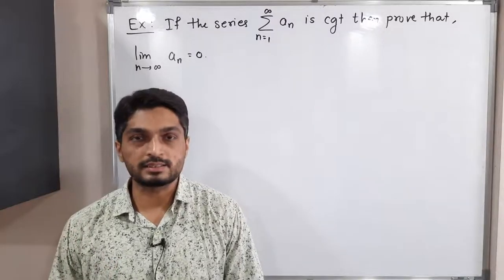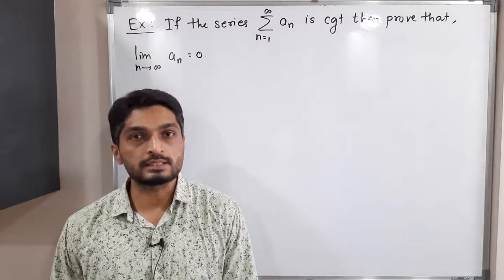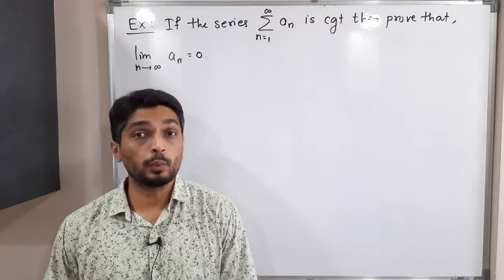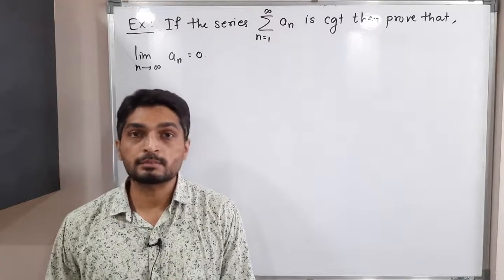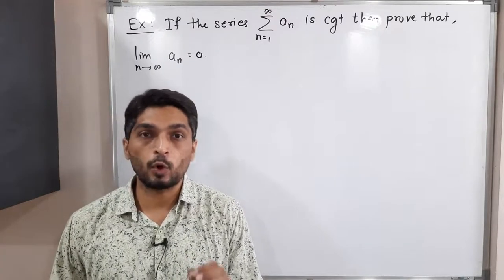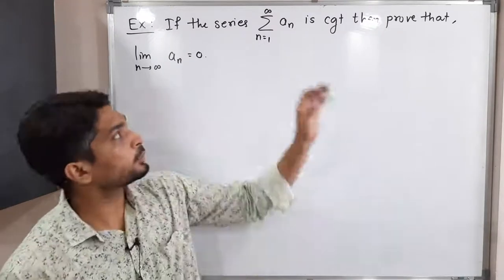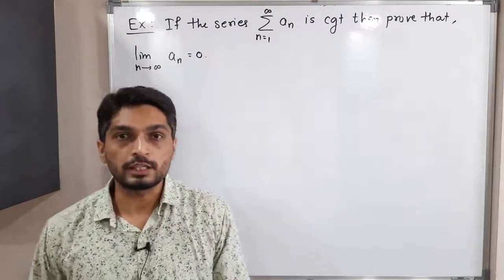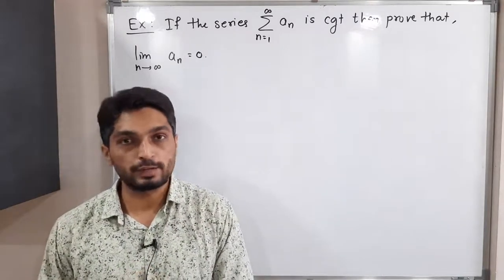Let us discuss this result. We have a series — summation of a_n, with n running from 1 to infinity. We are given that this summation a_n is a convergent series, and we have to prove that the limit as n tends to infinity of a_n is equal to 0.